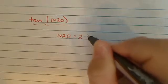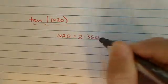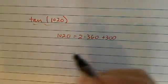The first thing you need to do is find out what the reference angle is. For us, that's 360 times 2, and you have 300 degrees left.